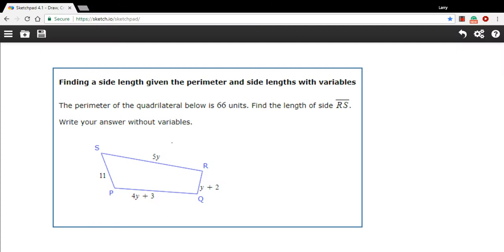In this problem, we're being asked to find the specific length of one of these sides in this shape. And we're being told what the perimeter is, but the sides are written, most of them, in terms of variables. So how do we go about this?